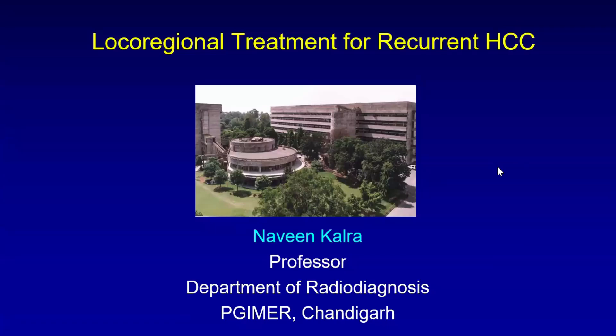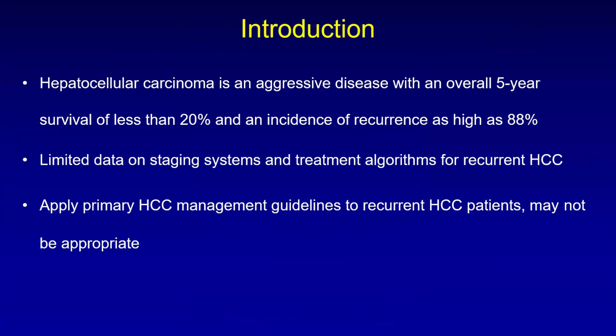We will be speaking on loco-regional treatment for recurrent HCC. Hepatocellular carcinoma is an aggressive disease with an overall 5-year survival of less than 20% and an incidence of recurrence as high as 88%. There is limited data on staging systems and treatment algorithms for recurrent HCC. We usually apply the primary HCC management guidelines to recurrent HCC patients, which may not be appropriate because the recurrent lesions may have a different tumor biology.